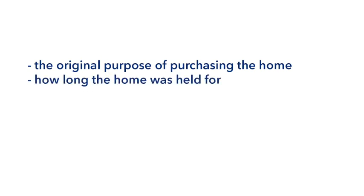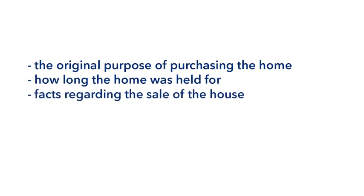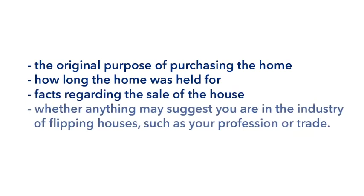If you are selling your house, having it characterized as capital property can be very advantageous. Under paragraph 41 of the Income Tax Act, if the property qualifies as a principal residence, the whole gain is exempt from tax. For this reason, the CRA will scrutinize every relevant factor, including the original purpose of purchasing the home, how long the home was held for, facts regarding the sale of the house, and whether anything may suggest you are in the industry of flipping houses, such as your profession or trade.